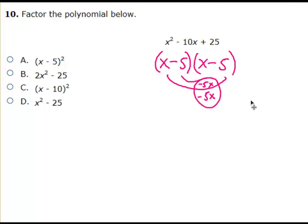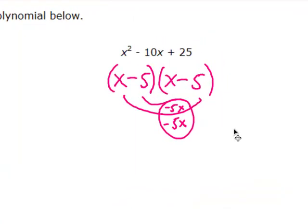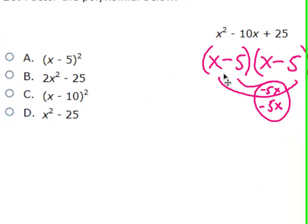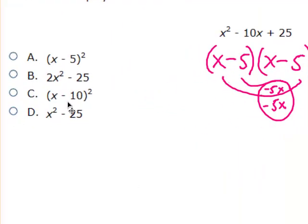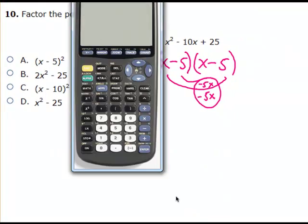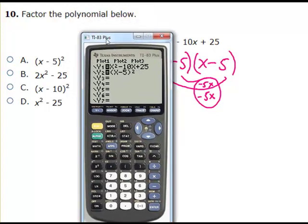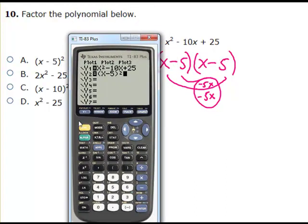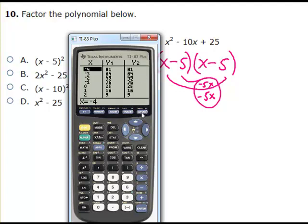Here's another example — a relatively easy trinomial to factor. The signs have to be the same. The last terms need to multiply to give positive 25, yet the outers and inners need to add up to negative 10x. So my answer is A. Just as a backup, go to the y equals screen, type in the original problem, type in what you believe your answer is, and confirm it by going to the table — both columns are the same.